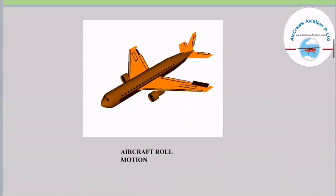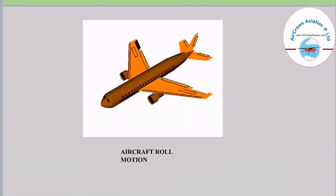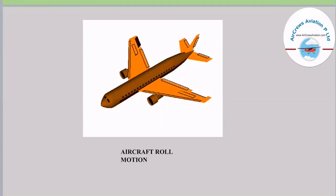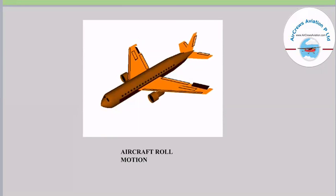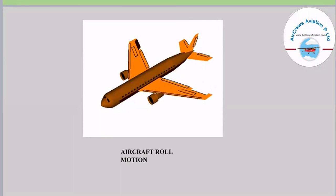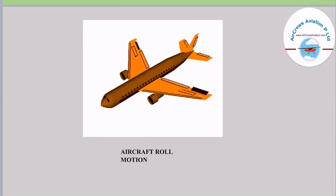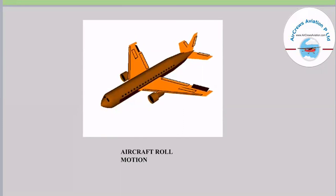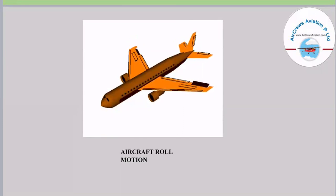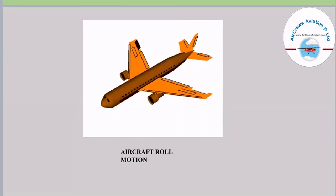Here we can clearly see the aircraft roll motion. When an aircraft is banking, it uses ailerons as a control surface. If an aircraft has to roll, the ailerons go in alternate positions — if the right aileron goes up, the left aileron goes down and vice versa. That is how the aircraft roll motion is accomplished.